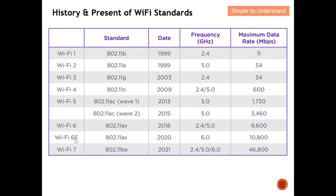Wi-Fi 6E — the 'E' stands for 'extended.' Wi-Fi 6E introduces a new frequency spectrum called sub-6 GHz, which provides another alternative frequency spectrum. Once you provide another alternative frequency spectrum, your throughput will be increased and the number of clients you can serve also increases. So the motivation of Wi-Fi 6E is to move to another frequency band — sub-6 GHz.